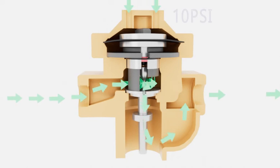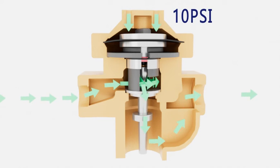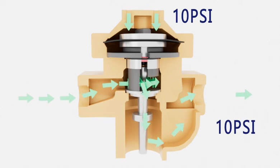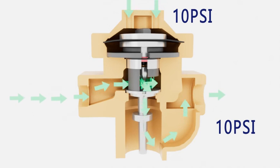For example, if you put 10 psi on the dome, you will see approximately 10 psi on the downstream side of the regulator, or P2.